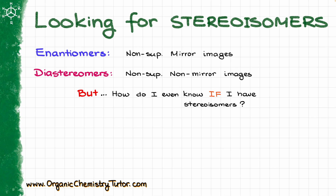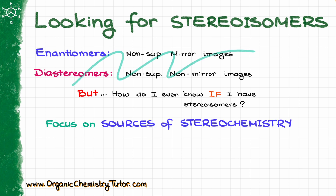If I have a product of a reaction, or just some random molecule in front of me, how do I determine if I have stereoisomers to begin with? In this case, what is going to be more useful is instead of focusing on the definitions, rather we are going to focus on sources of stereochemistry — the molecular features that will give us said stereoisomers.